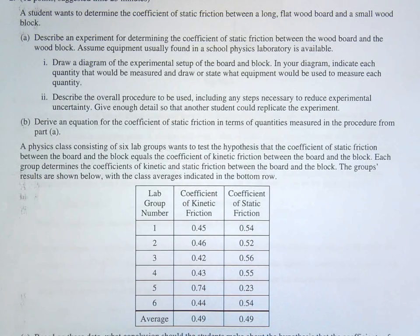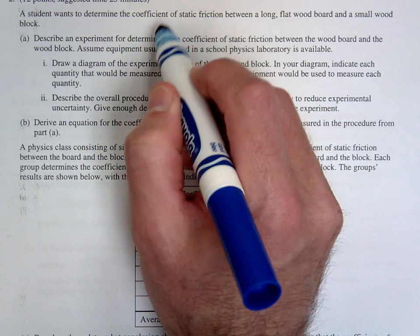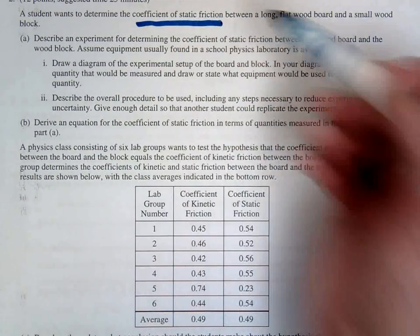This is the 2017 AP Physics 1 FRQ question number 2. In this question they want you to design an experiment to figure out the coefficient of static friction.